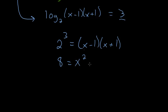Then the outer, x times 1, would be just plus x. And the inner is minus 1 times x, so minus x. And the last is minus 1 and plus 1, so we have minus 1.